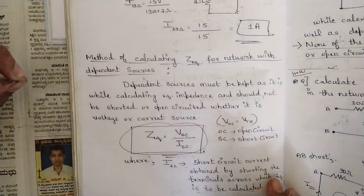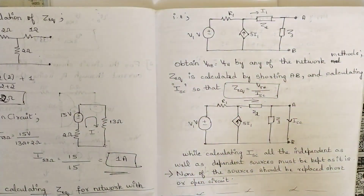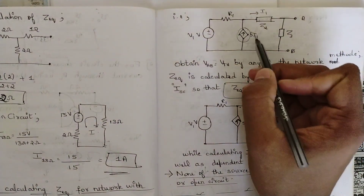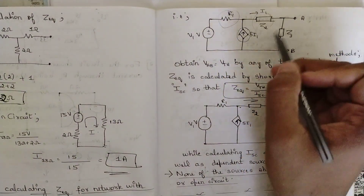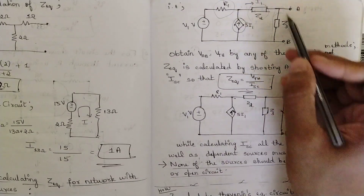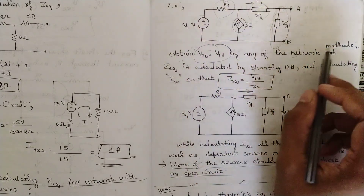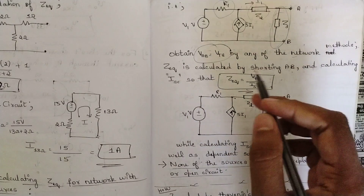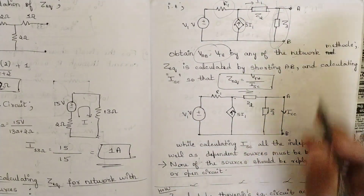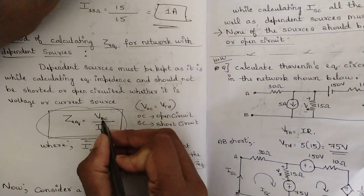Now consider a network as a simple example. Here I have considered one network where we have one dependent source — a current-controlled current source — along with resistors, two impedances, and one voltage source. Obtain Vab = Vth by eliminating the load impedance. Then obtain Z-equivalent by shorting terminals A-B and calculating Isc, so Z-equivalent = Vth / Isc, since Voc = Vth.